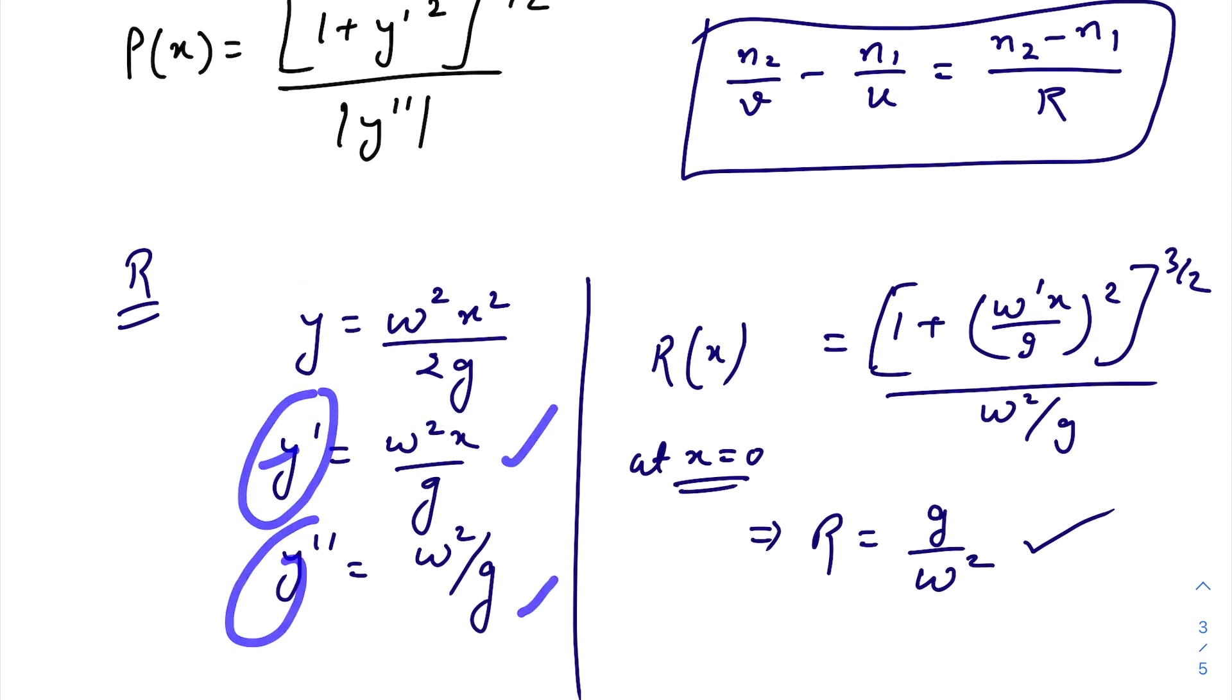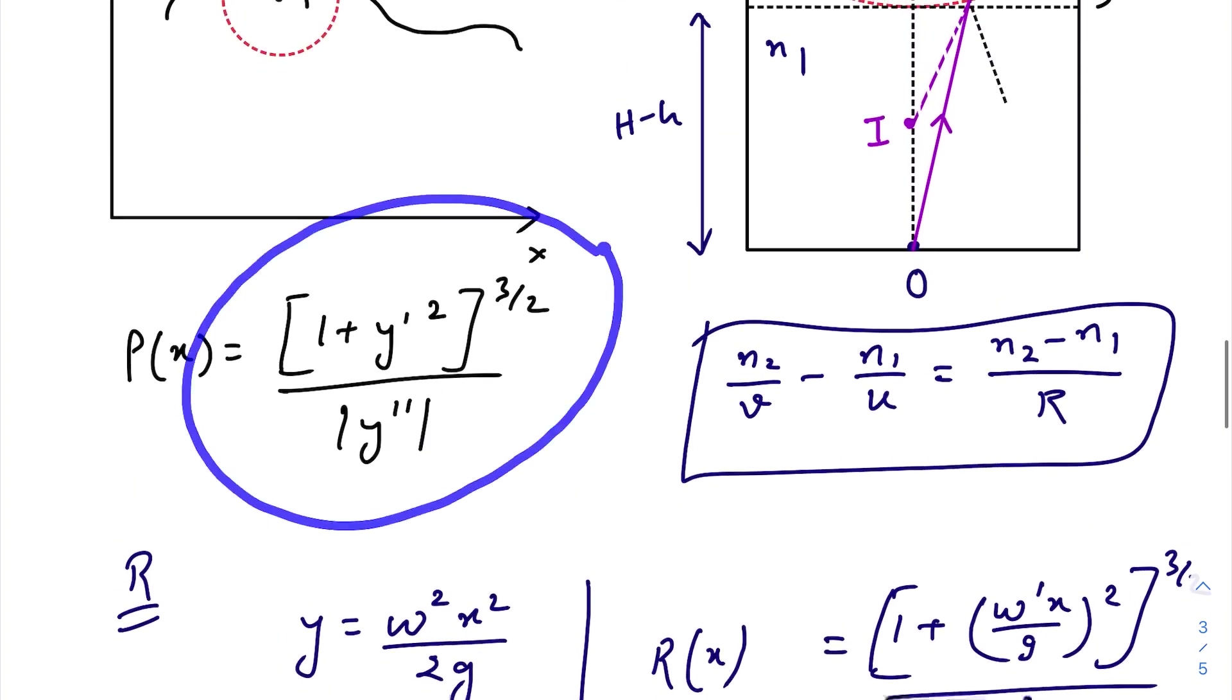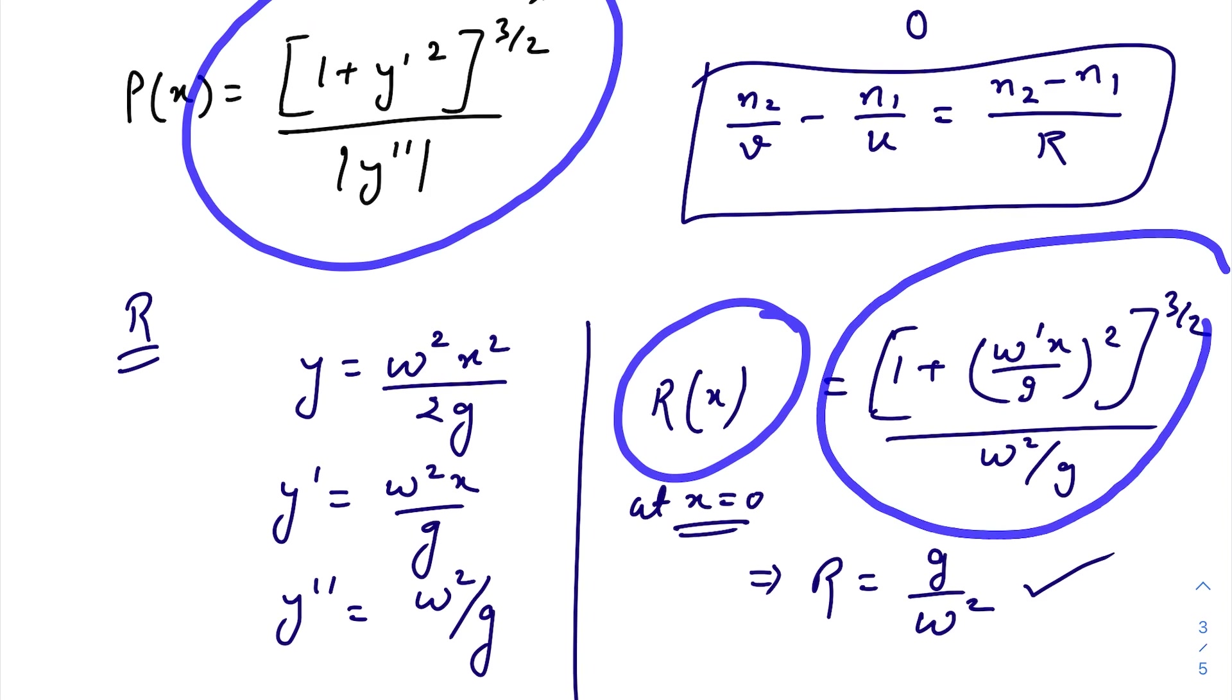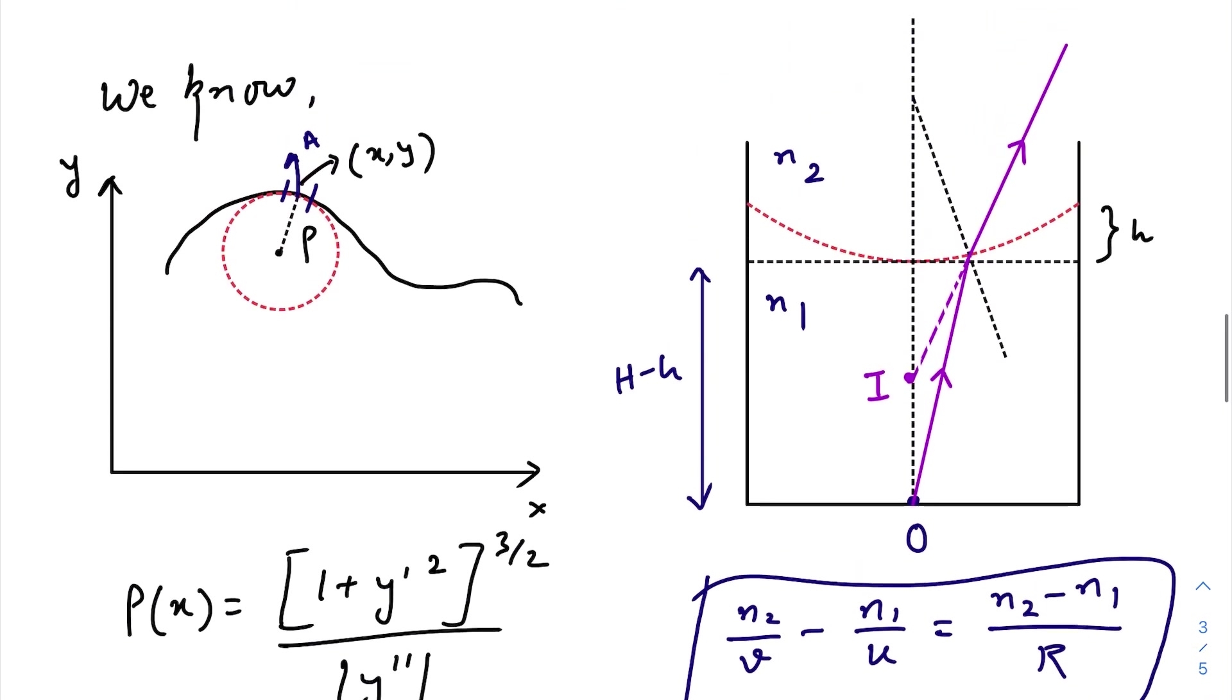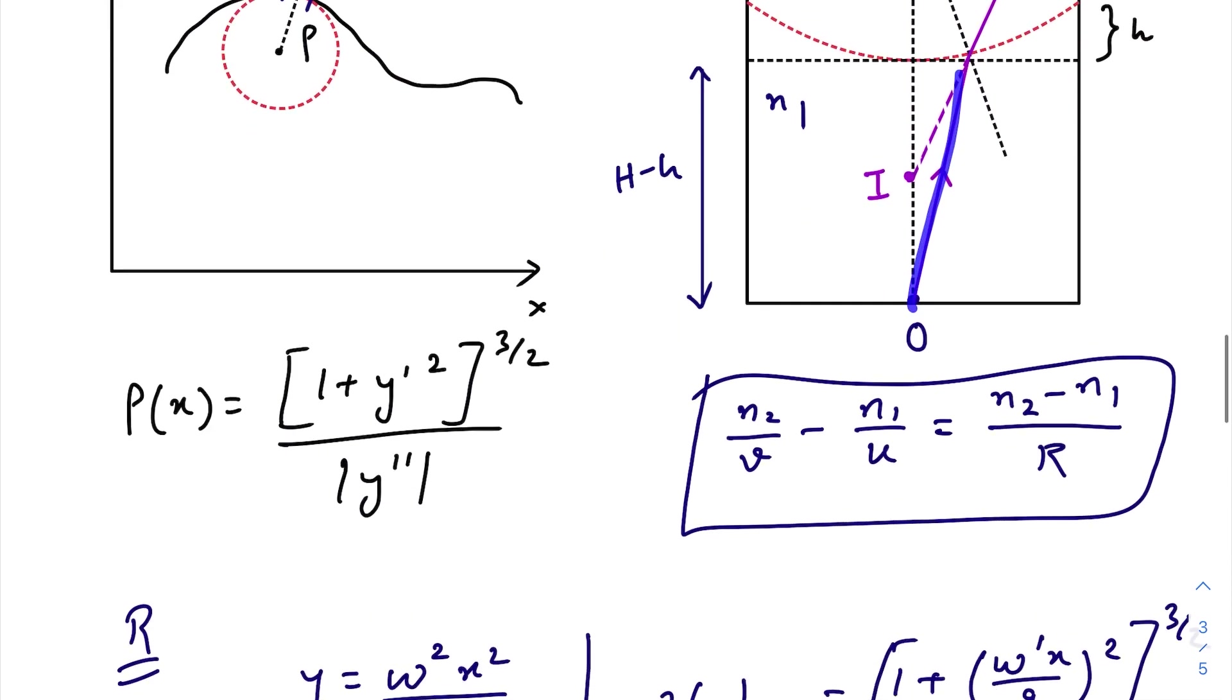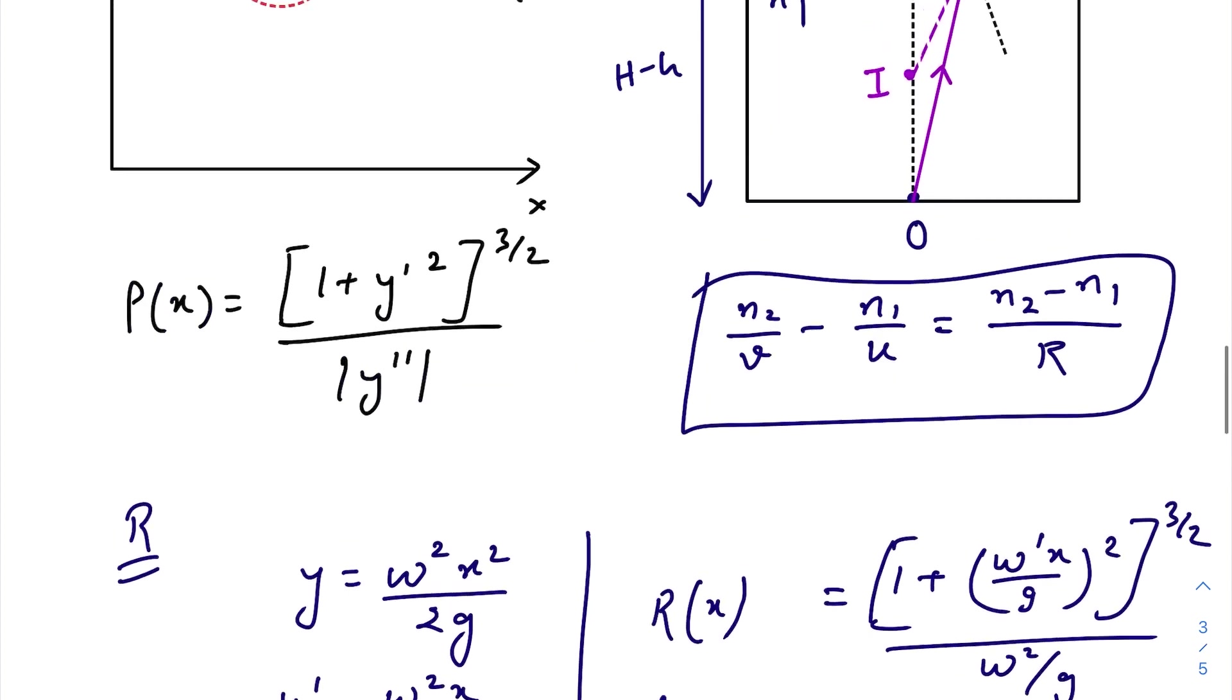Now according to the formula of radius of curvature, we get R(x) as this one. Now just put x = 0, why? Because we need to actually find out the radius of curvature at x = 0, considering the rays are paraxial in nature. Otherwise we won't be able to use this formula. So we get the expression for radius of curvature as g/ω².